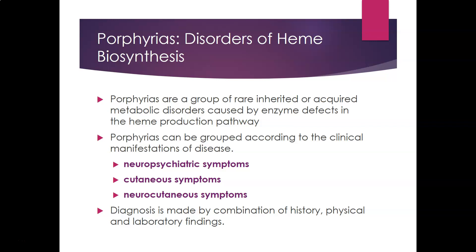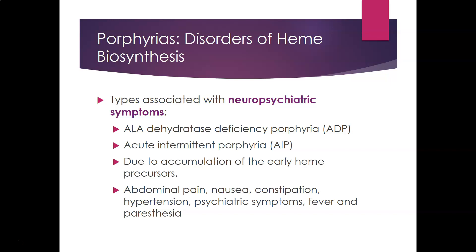Diagnosis is made by a combination of history, physical examination, and laboratory findings. The porphyrias associated with neuropsychiatric symptoms are ALA dehydratase deficiency porphyria (ADP) and acute intermittent porphyria (AIP). These are due to accumulation of early heme precursors, and signs and symptoms include abdominal pain, nausea, constipation, hypertension, psychiatric symptoms, fever, and paresthesia such as tingling or burning in the hands and feet.